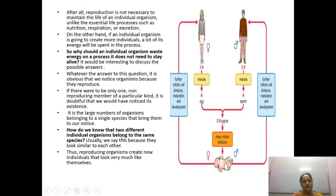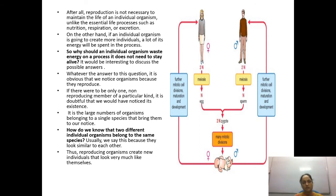How do we know that two different individual organisms belong to the same species? Usually we say this because they look similar to each other. Similarity here means characteristic features — like one nose, two eyes, and mammalian characteristics. These many characteristics will be the same when we are talking about the same species.